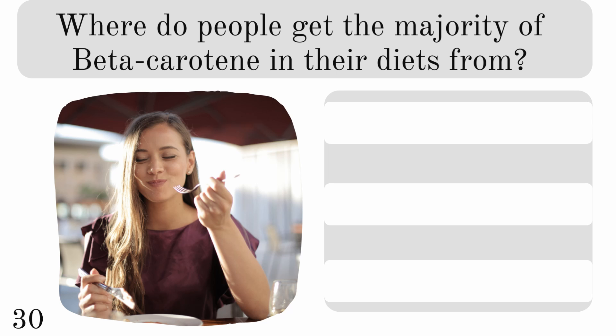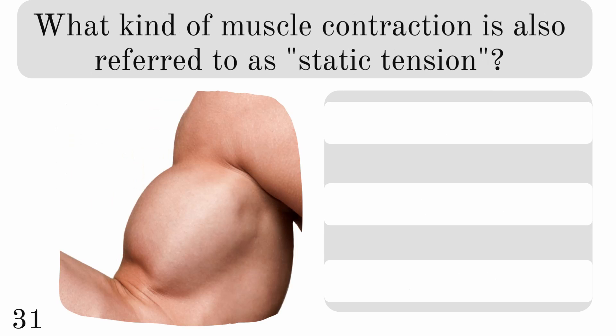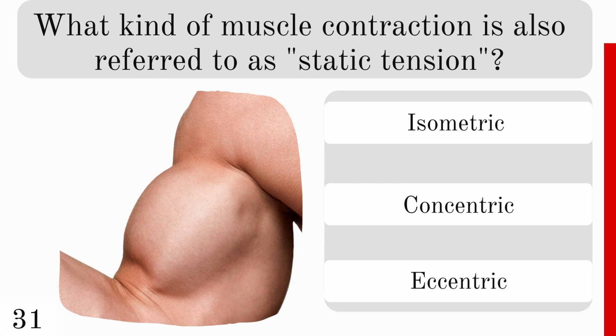Where do people get the majority of beta-carotene in their diets from? Eggs, oily fish, or vegetables? And it is vegetables. What kind of muscle contraction is also referred to as static tension? Isometric, concentric, or eccentric? And it is isometric.